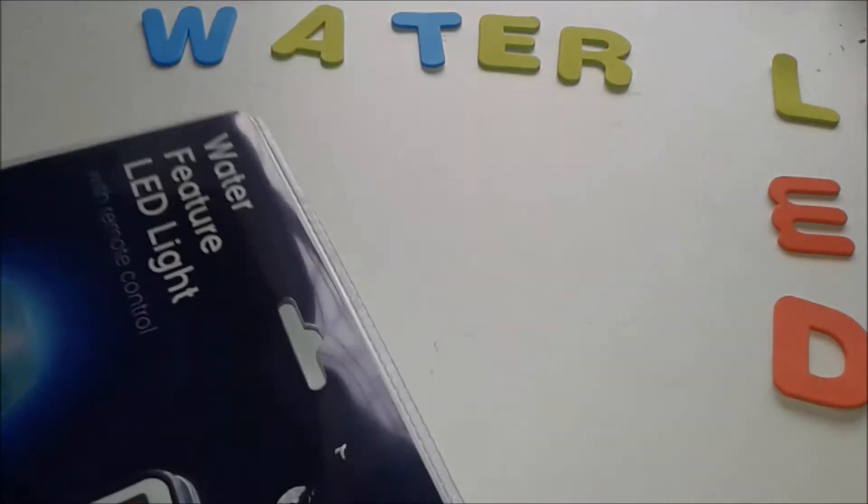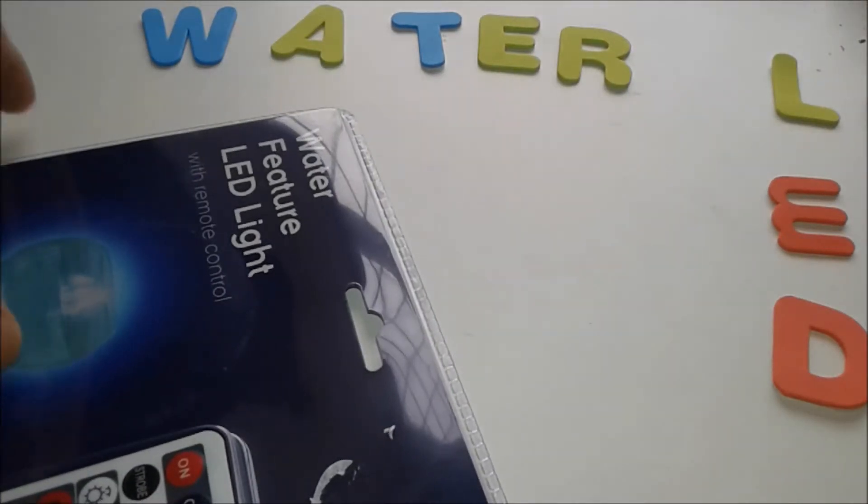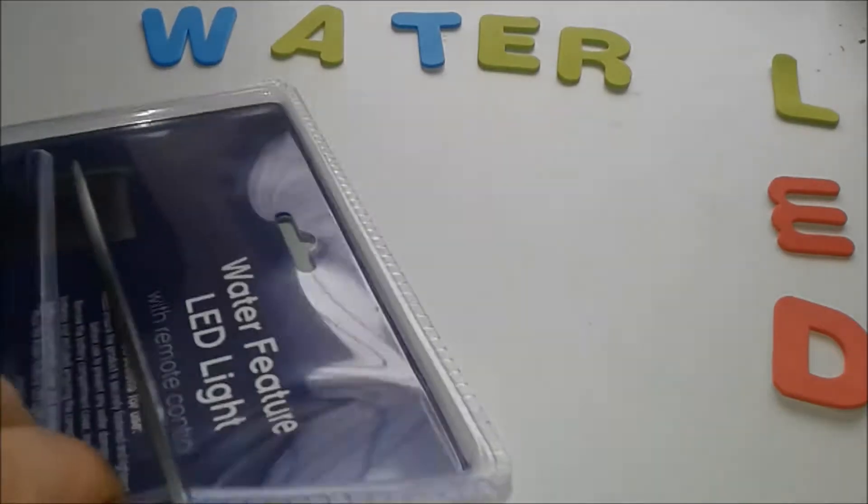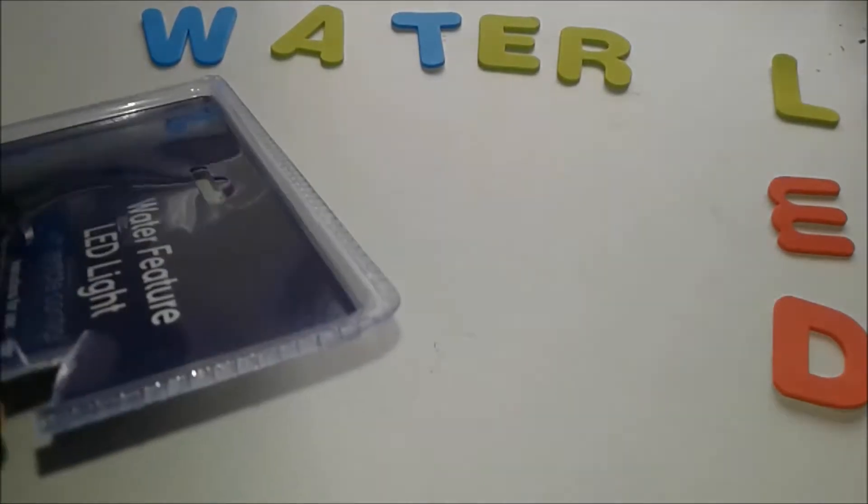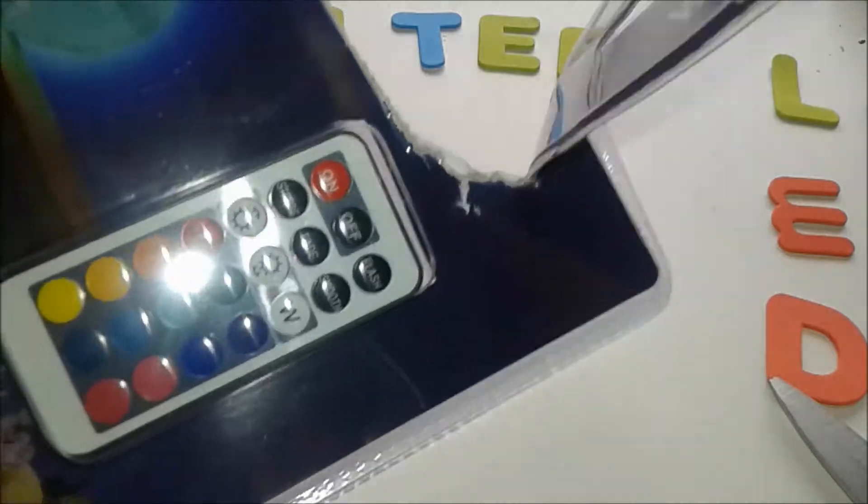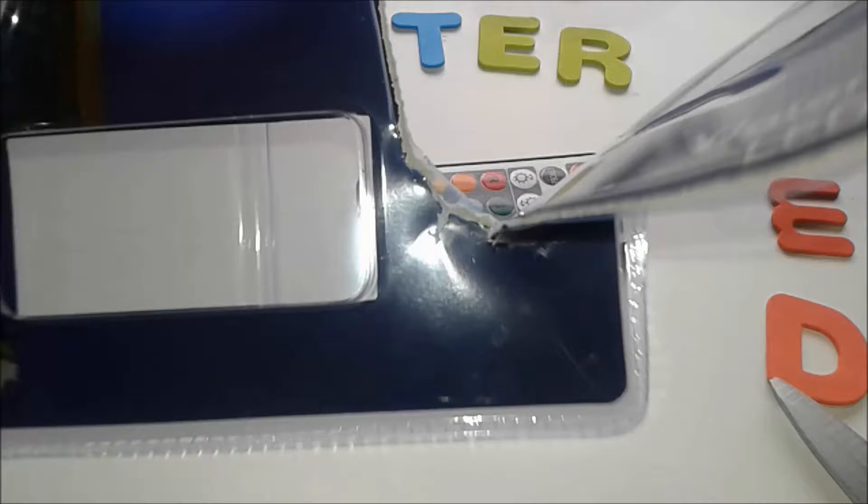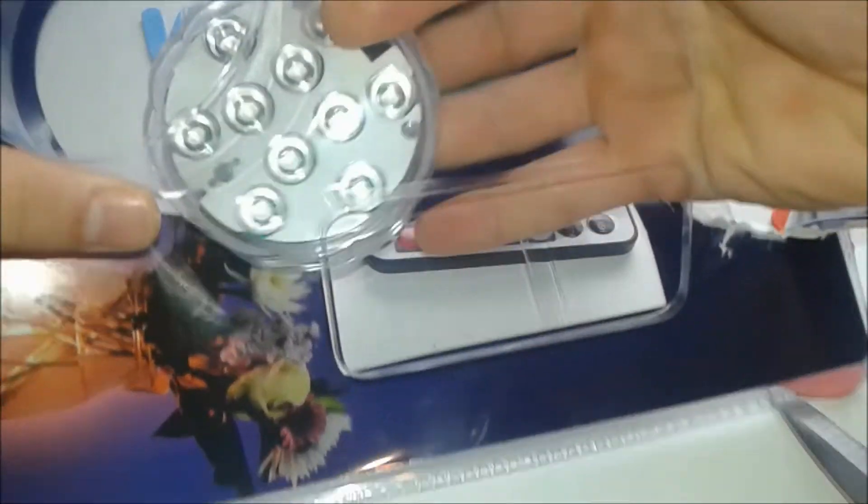Alright, so we have the thing here, water LED. Let's proceed by cutting the bastard out. We have cutting this hardboard, now we have a classical remote and the thingy which is inside here in this box.